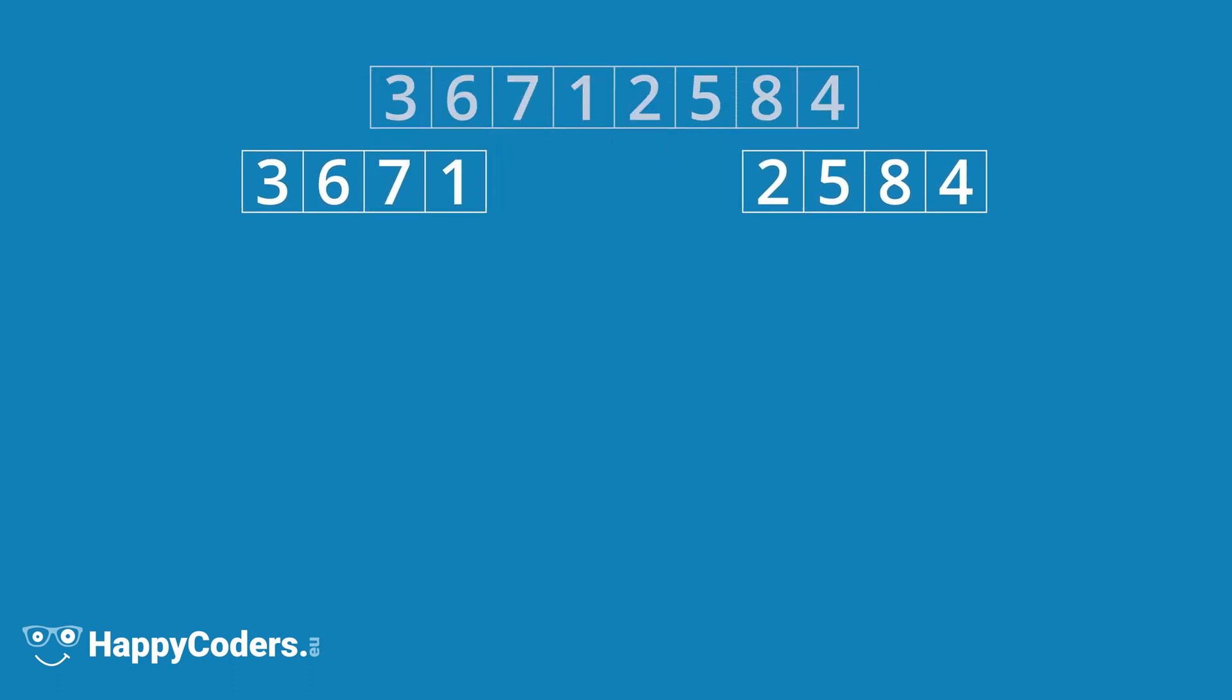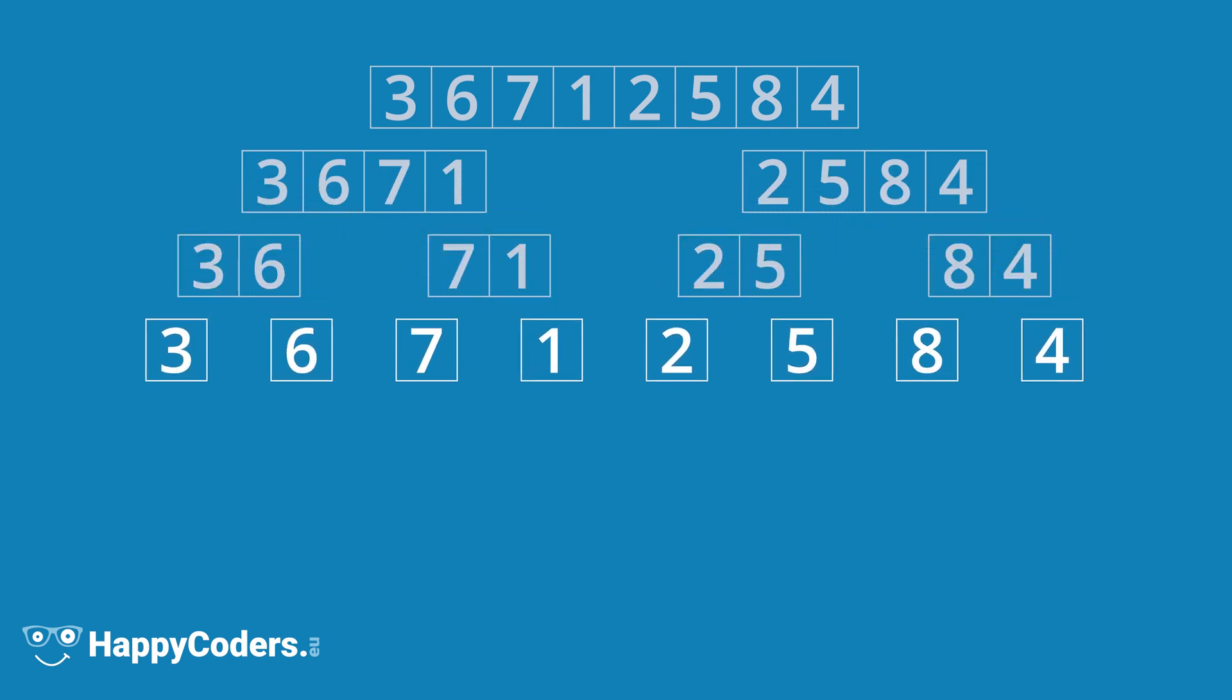We want to sort these eight numbers with Merge Sort. We divide the list in the middle. We split the two partial lists in the middle again. And once more. Now we have only sub-lists with one element. These are considered sorted.